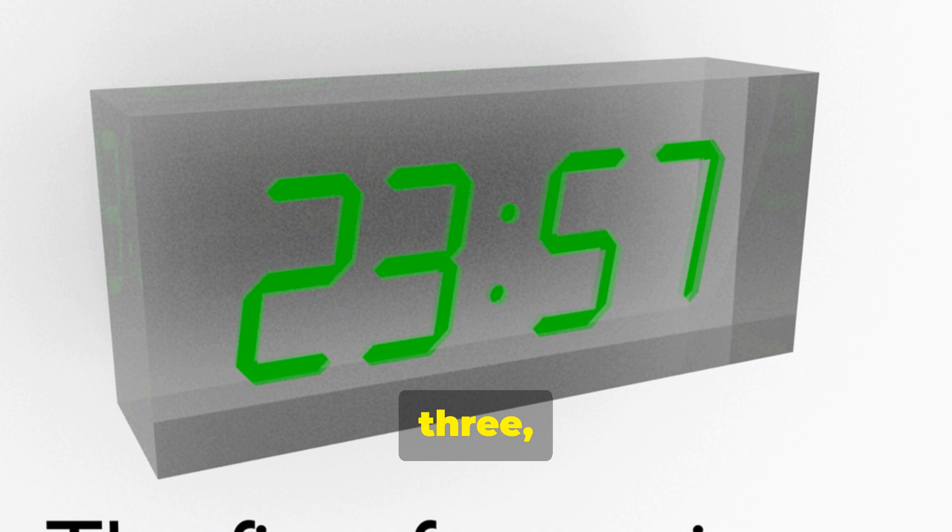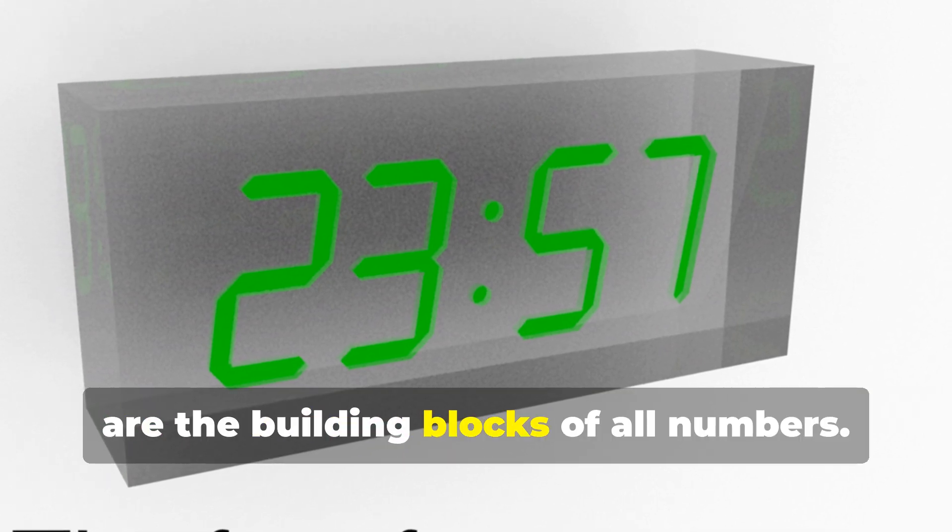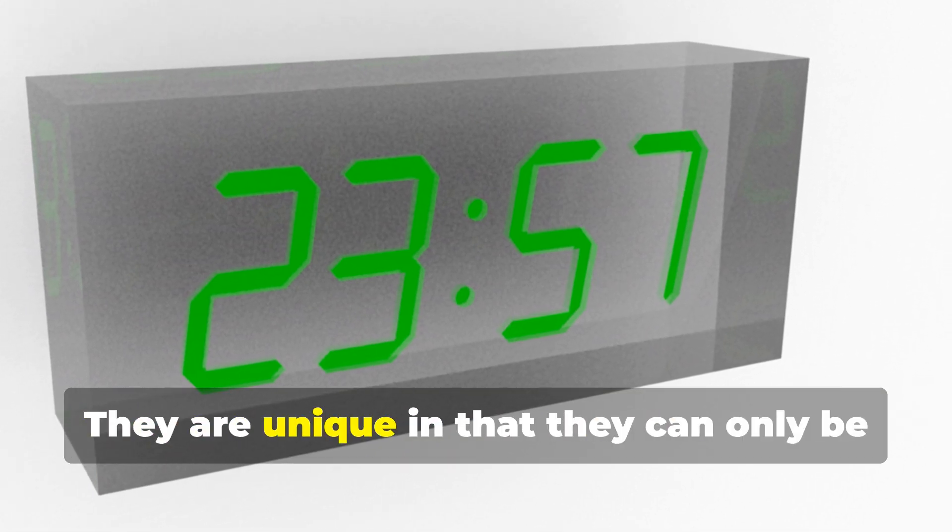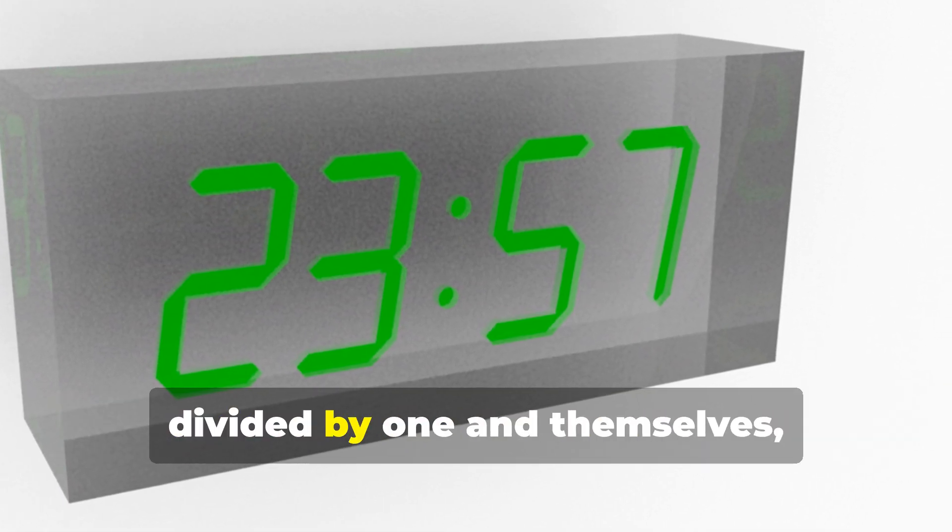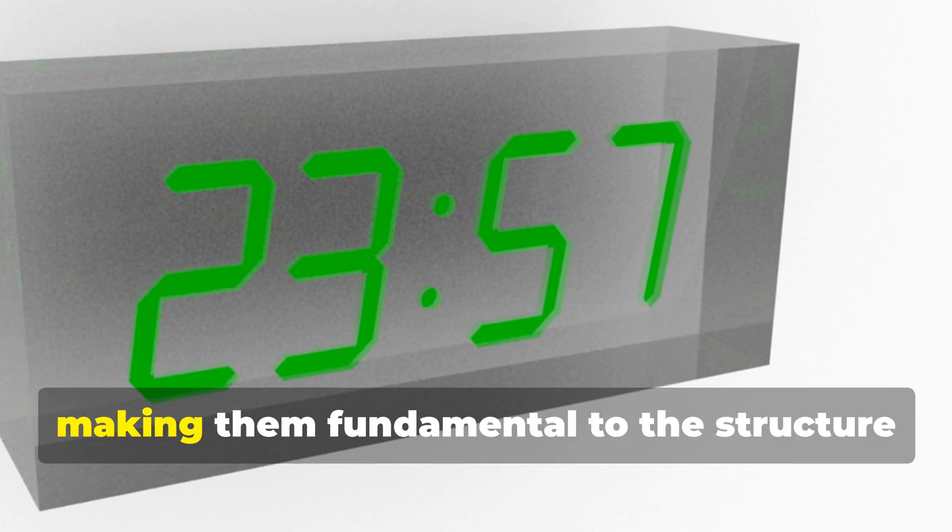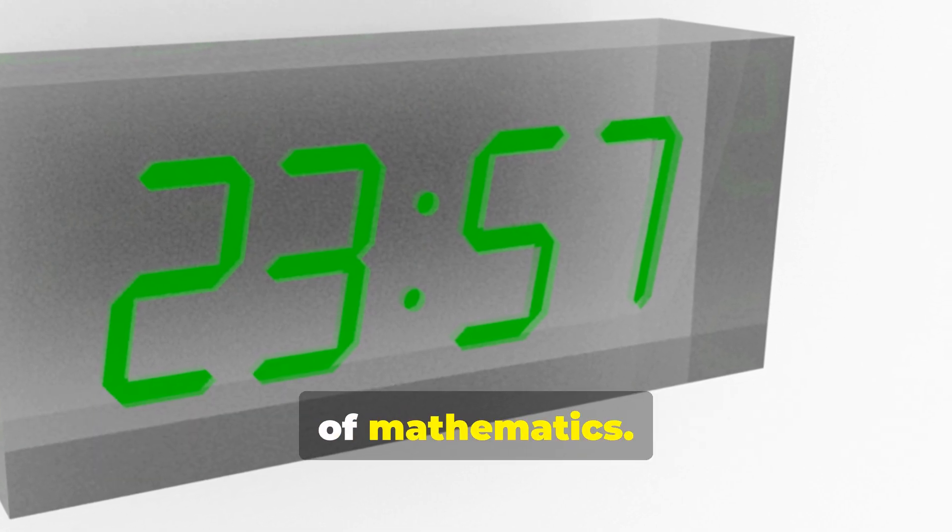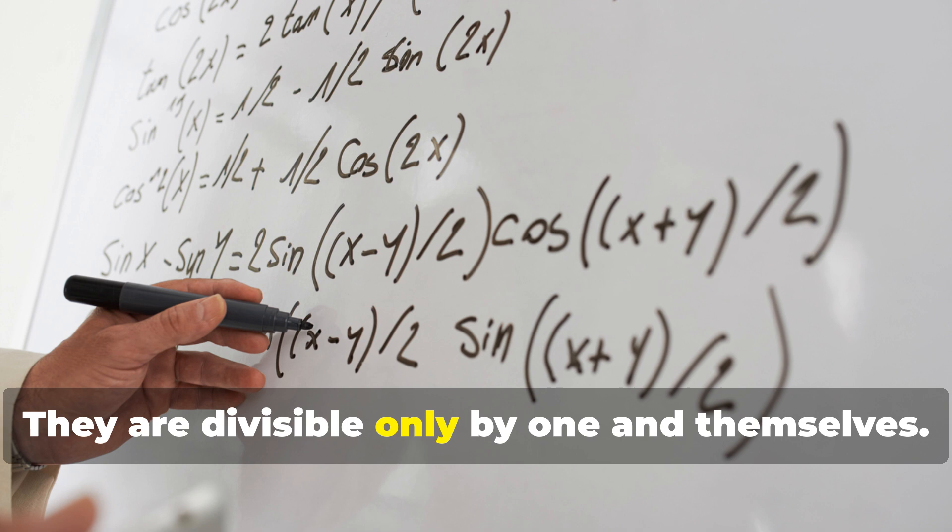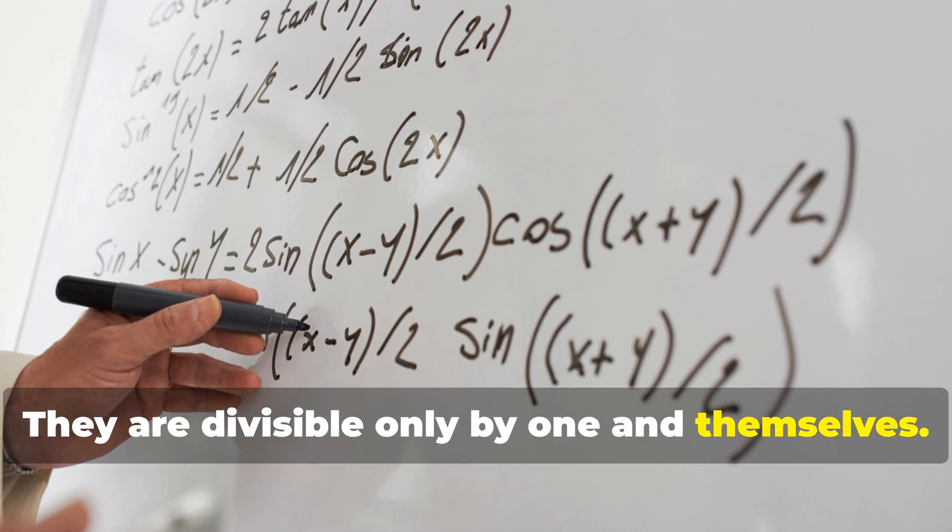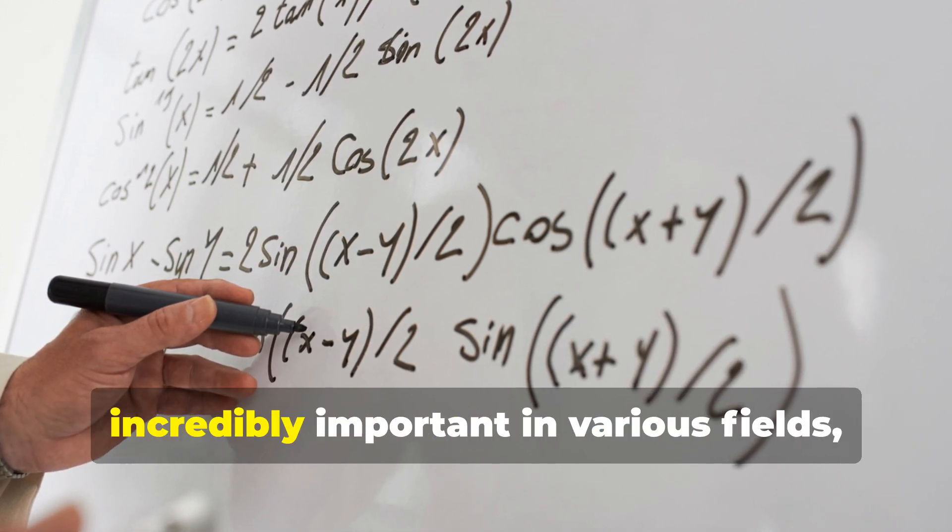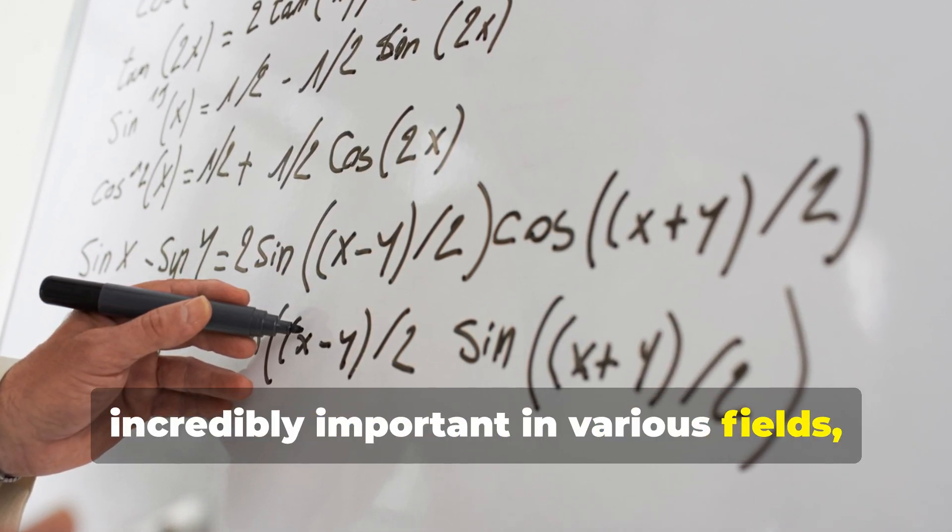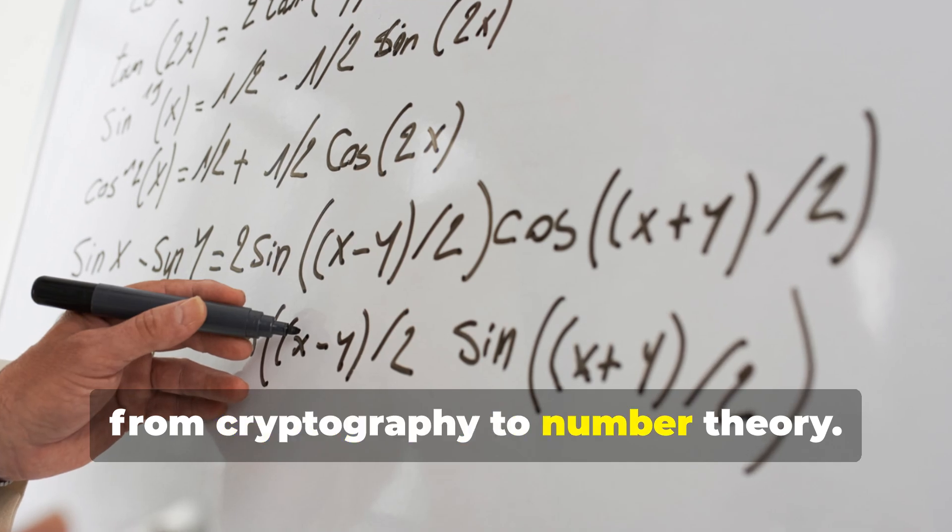Prime numbers like 2, 3, 5, 7 are the building blocks of all numbers. They are unique in that they can only be divided by one and themselves, making them fundamental to the structure of mathematics. This unique property makes them incredibly important in various fields, from cryptography to number theory.